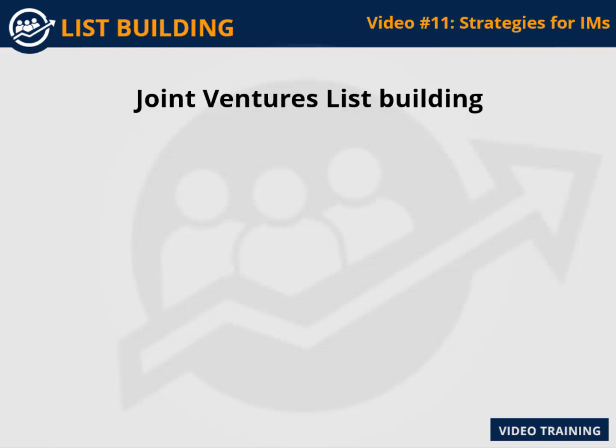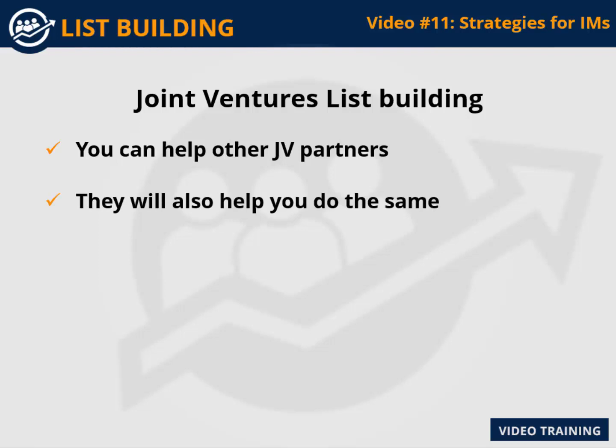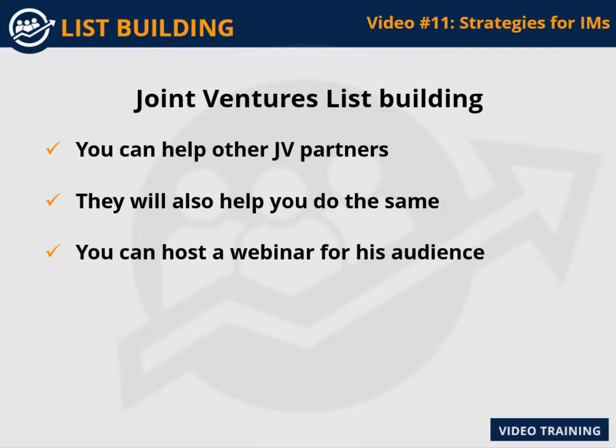Joint Ventures List Building. There is another robust and dominant method used by many internet marketers to grow their email list. You can help other JV partners to increase their potential return on investment and leads; in return they will also help you do the same. You can find a JV partner who has an existing mailing list and host a webinar for their audience.